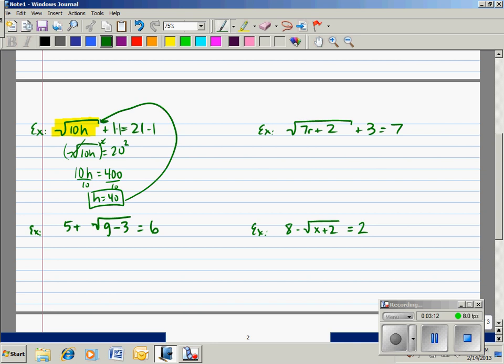Again, I can always take that solution, plug it back in for h to see if it works. So we would have the square root of 10 times 40, which is the square root of 400, that's 20, plus 1 would give us 21.